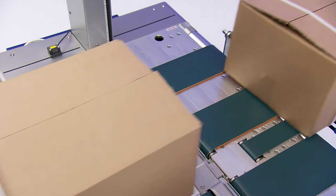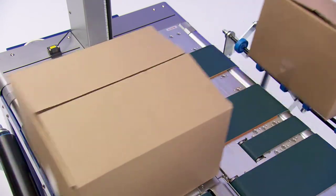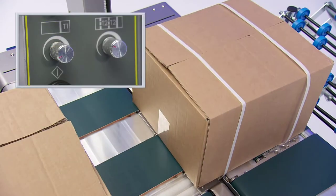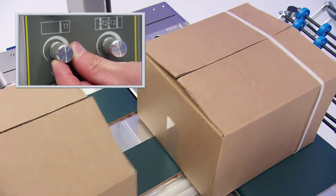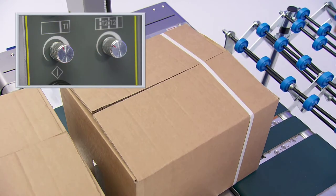The strapping sequence control is moved to position 2 for double strapping. The position of the second strap is set by adjusting the T1 timer control.